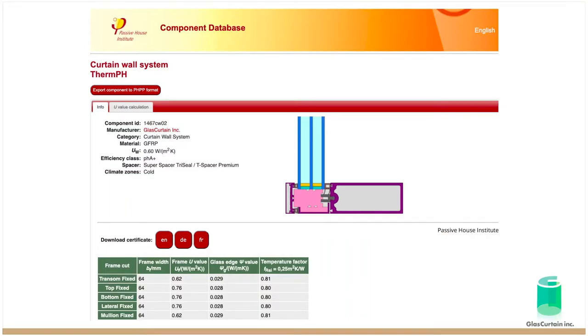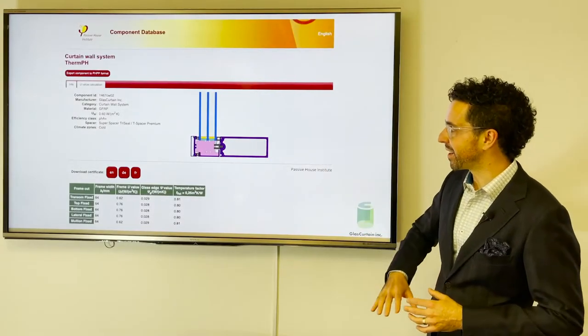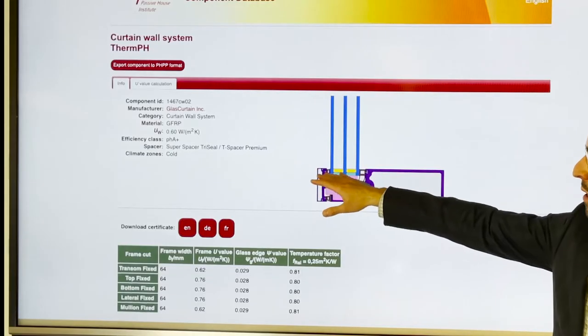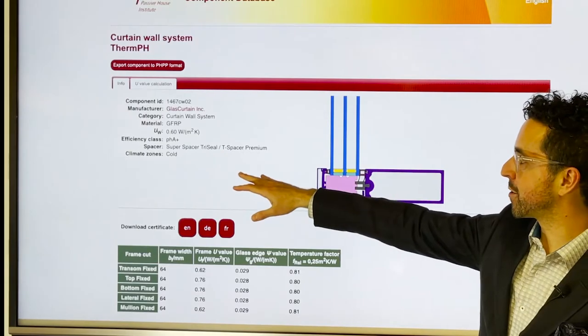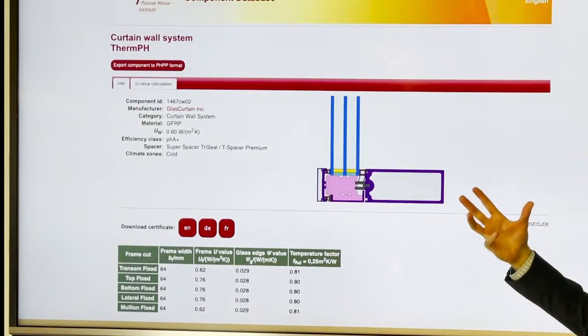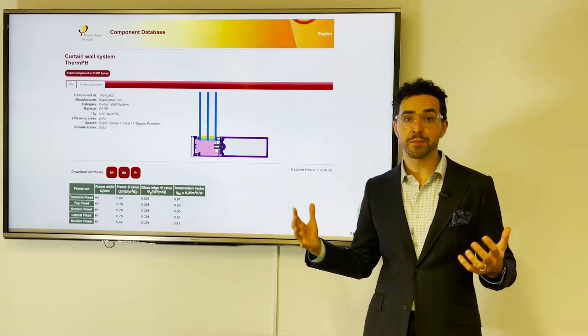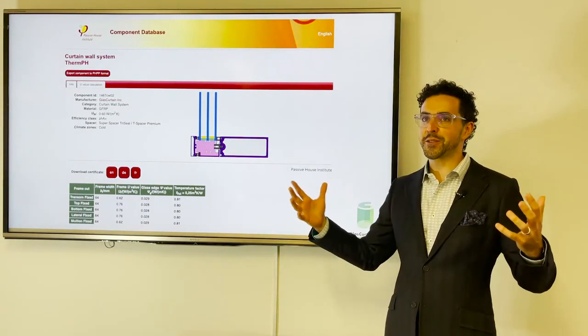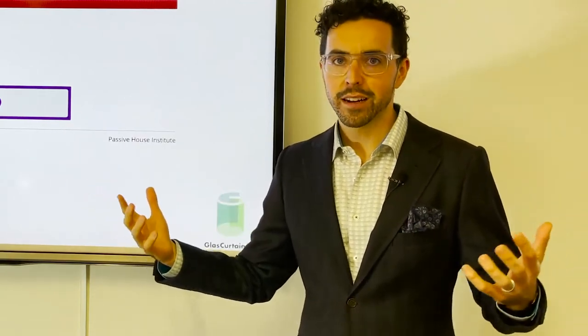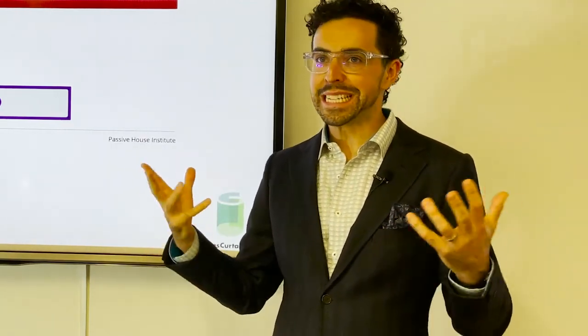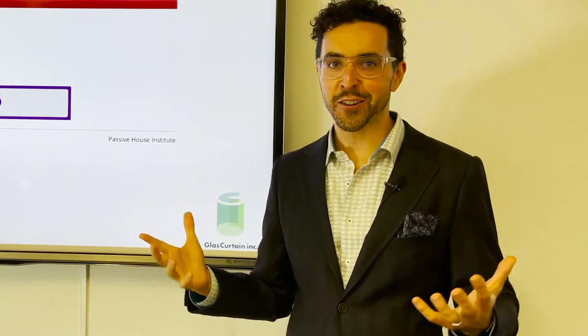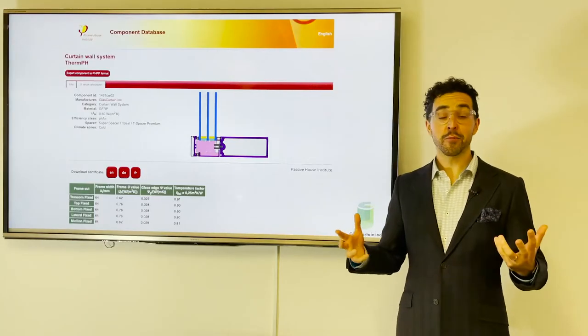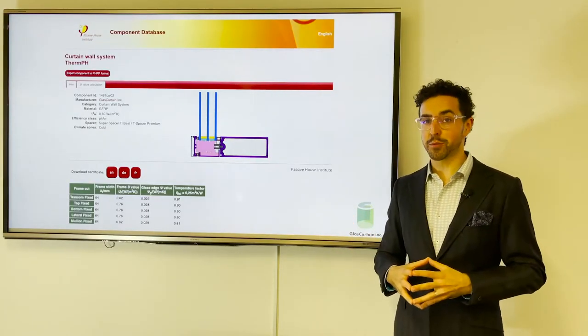This is it. We have the official certificate on the Passive House website, or at least the links to it. And you can see the different kinds of spacers we're using, the climate zone that it's certified to is the cold climate, the material it's using, and the U-value system of 0.6 Watts per meter squared Kelvin overall.